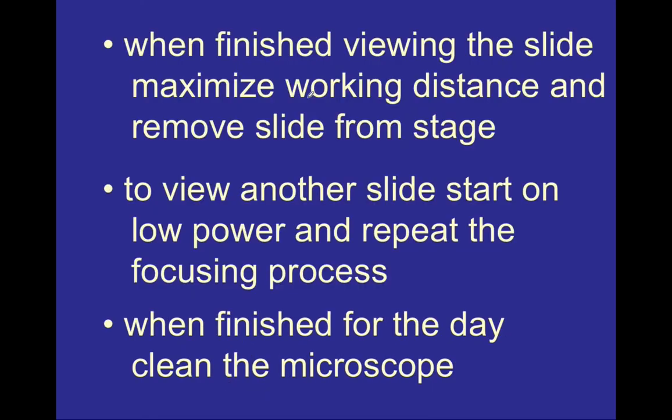Once you are finished viewing a picture on a microscope slide, use the coarse adjustment knob to increase the working distance back to its maximum to give you space to remove that slide and add another. After the new slide has been added, repeat this process using the coarse adjustment knob back with the scanning objective lens and proceed to increase in total magnification. You never want to start with the low power or the high power — always begin your focus with the scanning objective lens using the coarse adjustment knob.